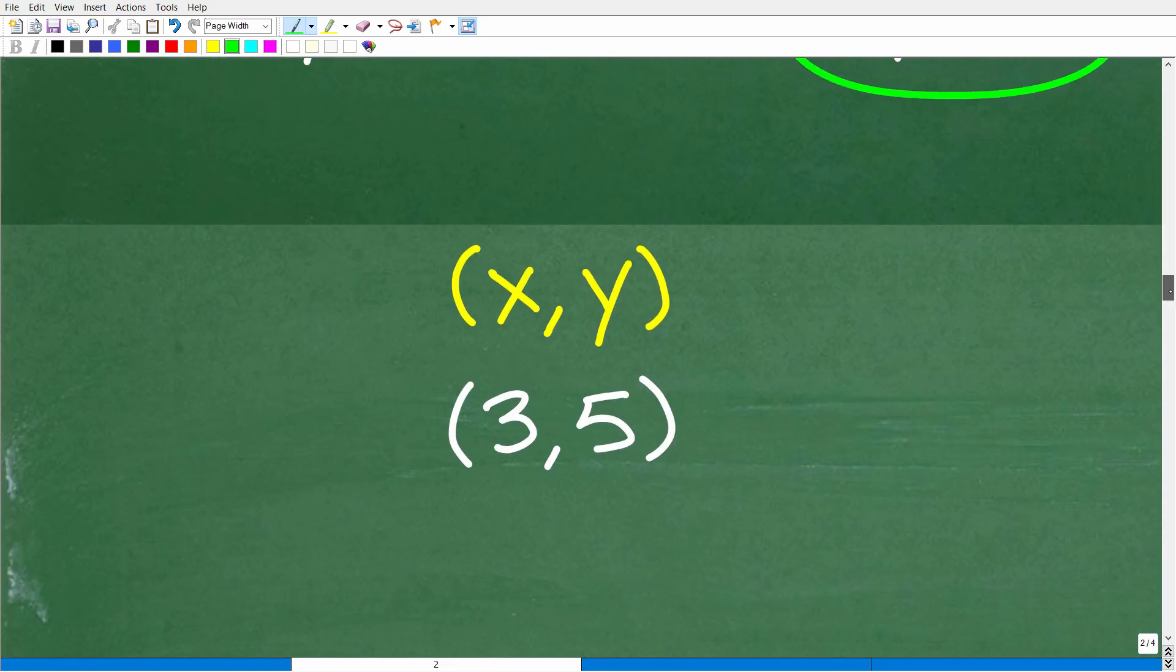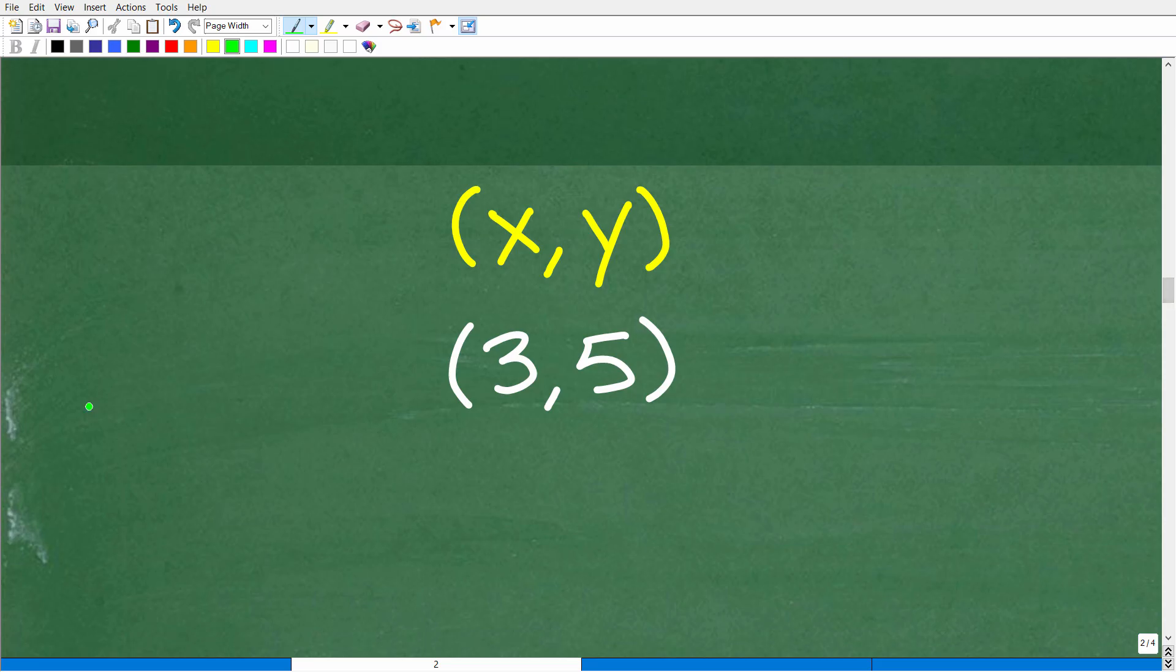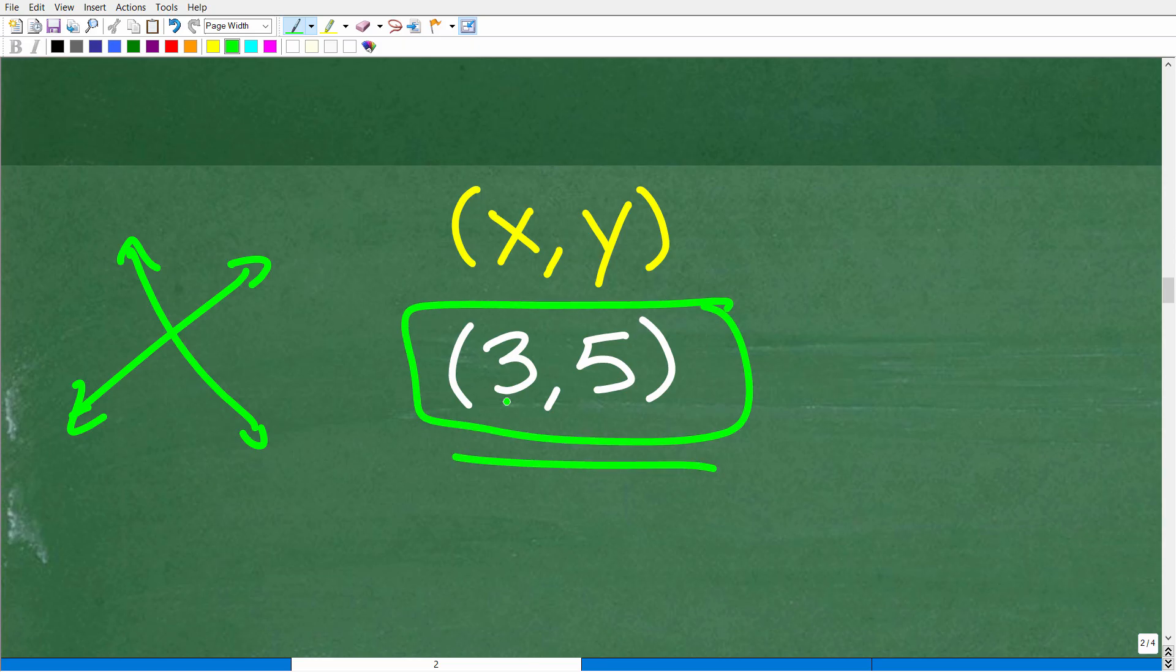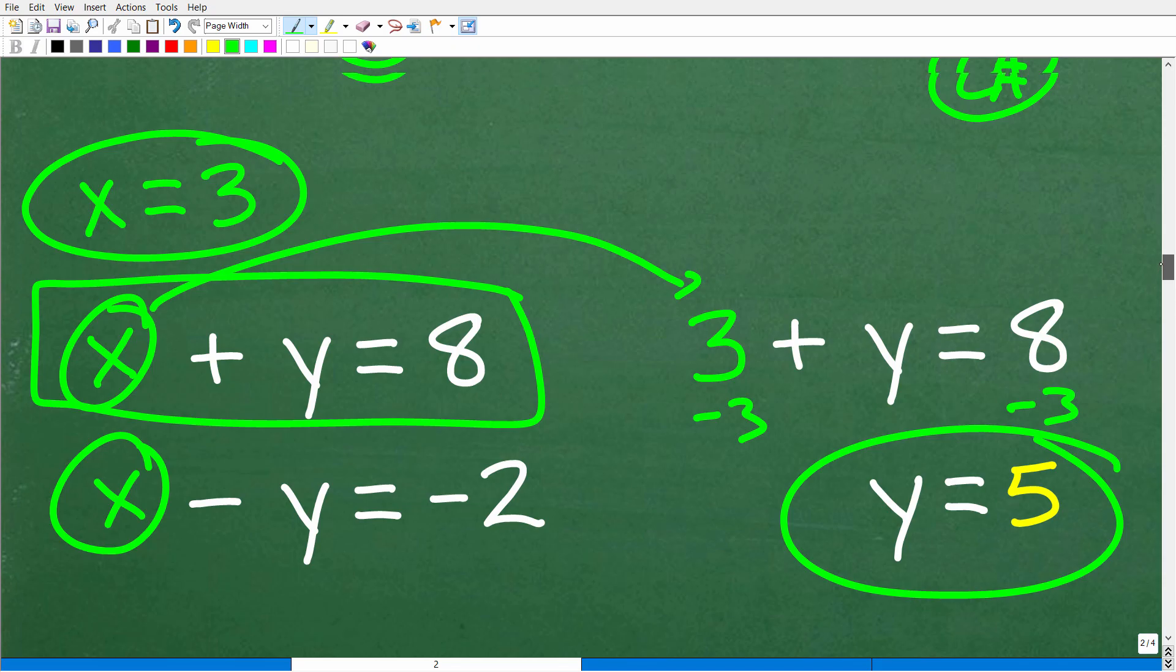But what does that mean? Well, that means that in this system, if we were to graph these two lines, these two linear equations, those lines would intersect at the coordinate 3, 5, the ordered pair, the point on the x, y axis.